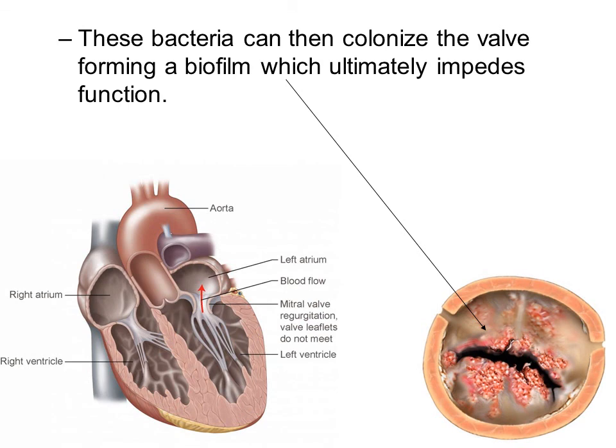Bacteria such as Staphylococcus aureus can then colonize the valve, forming a biofilm which ultimately impedes the function. Through some type of surgery, the skin bacteria Staphylococcus aureus is introduced into the bloodstream, circulates through the cardiovascular system, then attaches to the heart valve where it will form a biofilm and grow, ultimately impairing valve function.